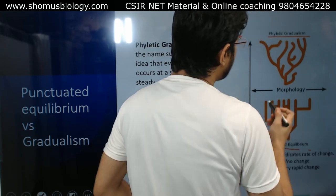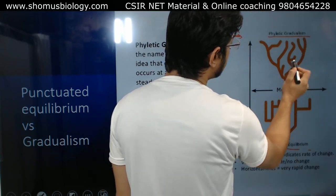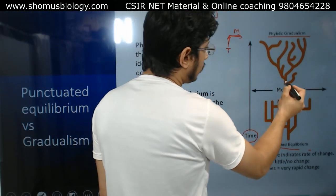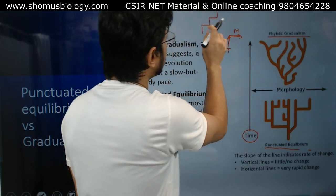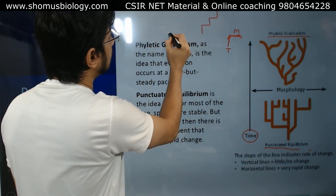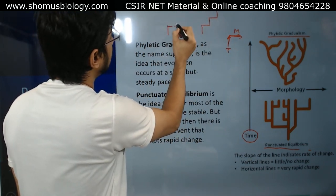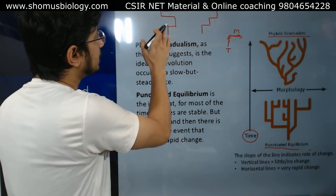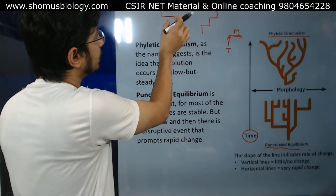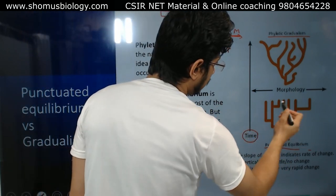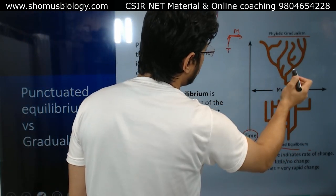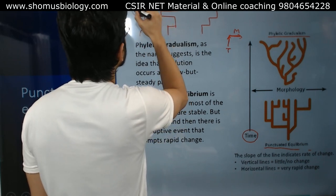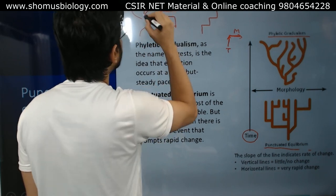In gradualism, you can see it looks like a natural tree — generally a tree-shaped structure. There is no proper straight-line dot structure. In punctuated equilibrium, when we draw time and then morphology, it is something straight, which is missing in gradualism. In gradualism, it is like an organic, tree-like structure.